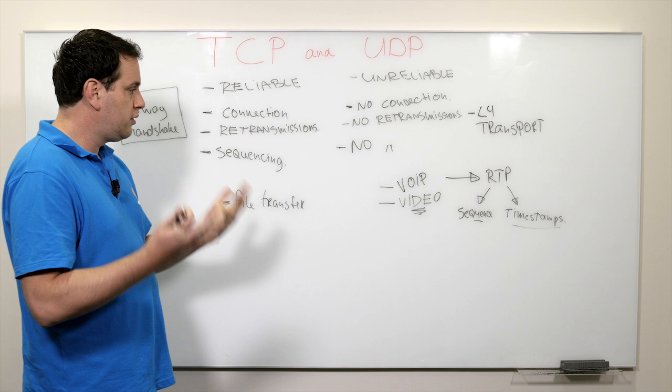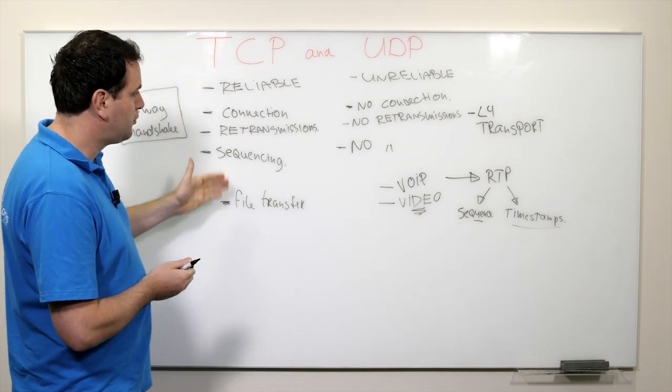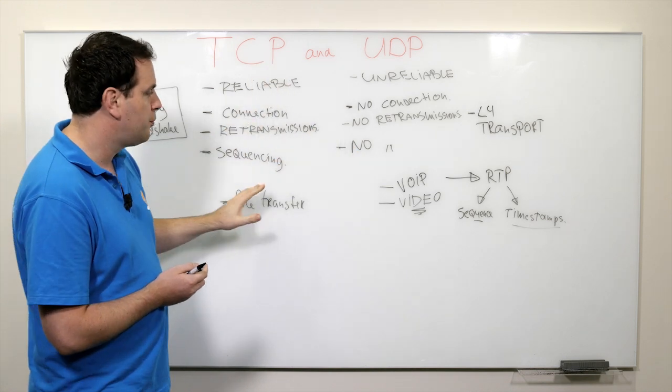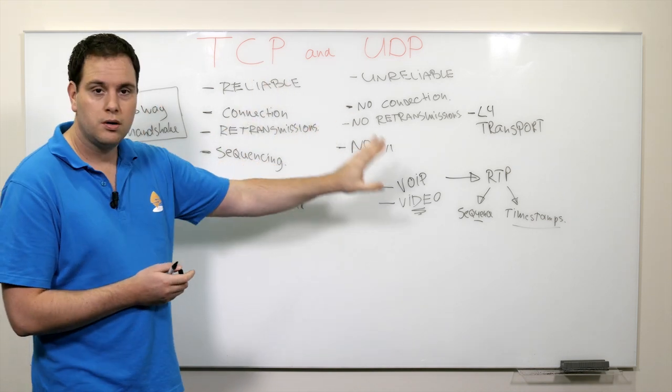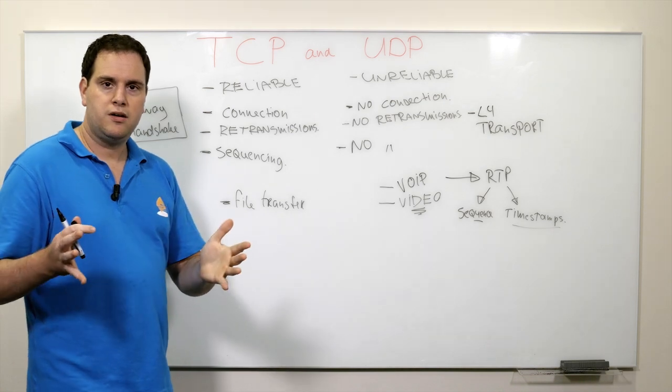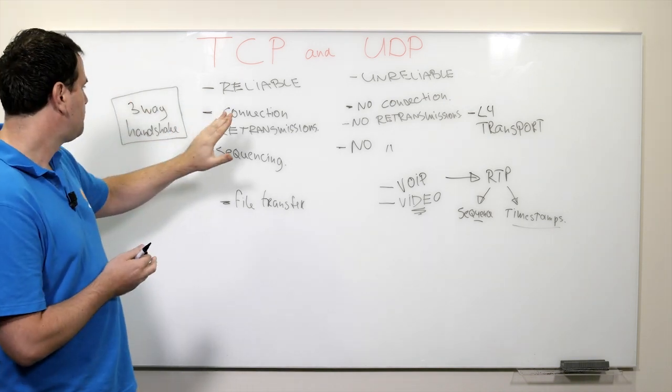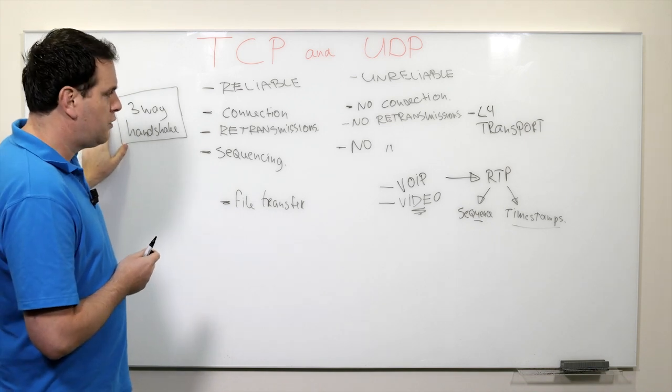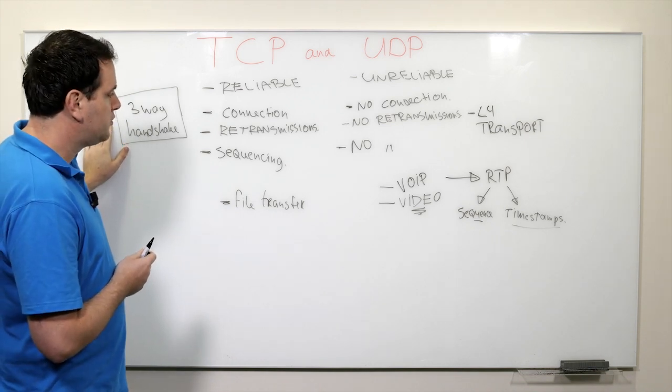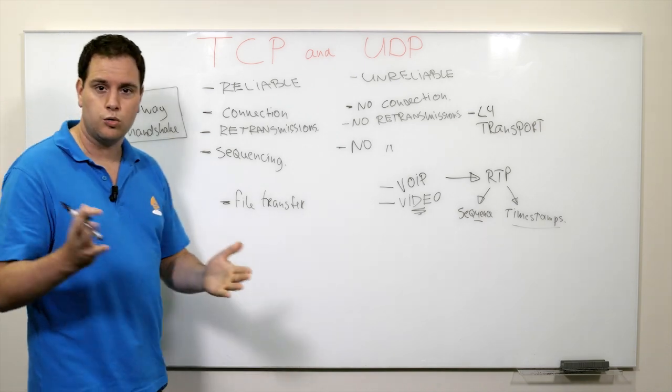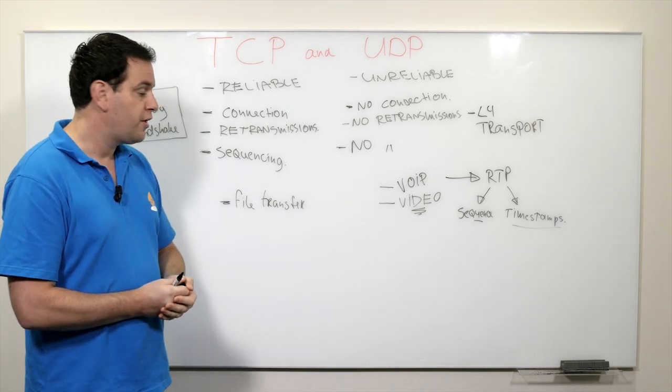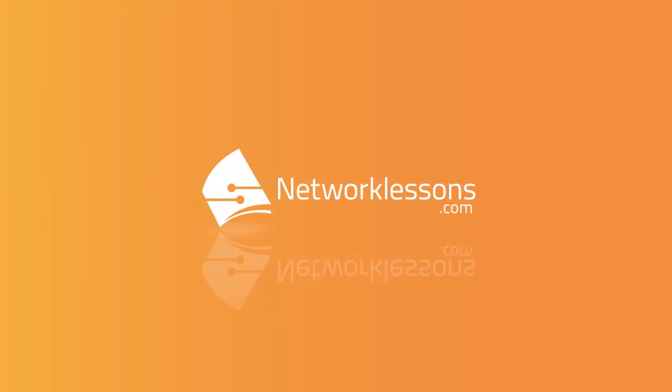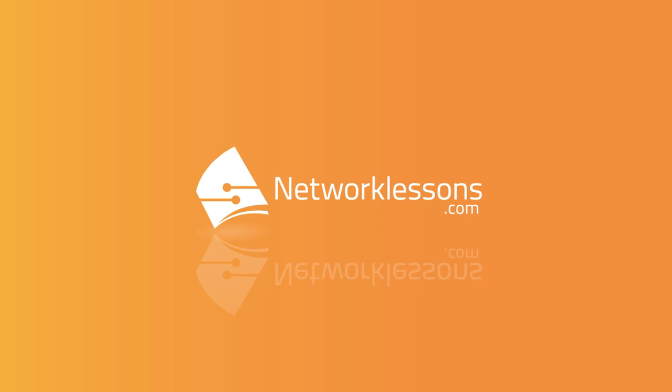Anyway, this is an introduction. So you've seen some of the differences between the two protocols. And you have some examples why you want to use TCP or UDP. Now in some other videos, I will be explaining a lot more about TCP. For example, this three-way handshake. We'll look at it. But for now, this is it. So just an overview. And I hope this has been useful to you. Thanks for watching. And until next time. Bye.